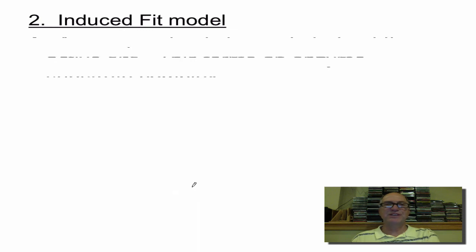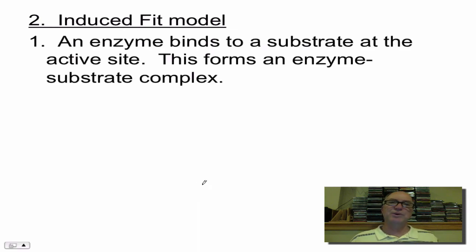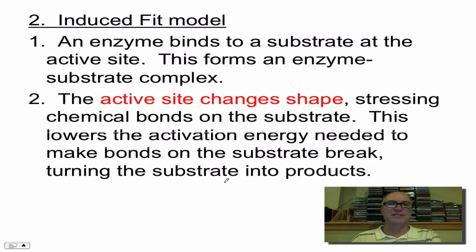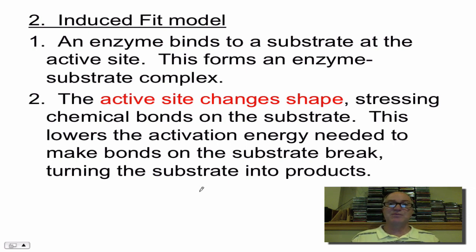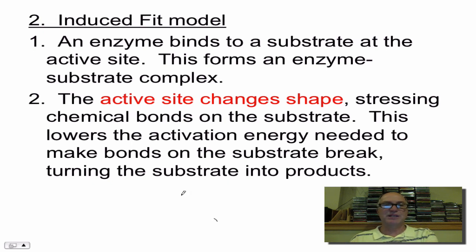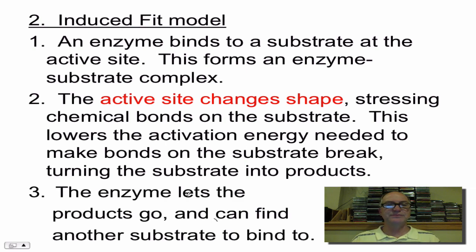Now there's a second model called the induced fit model. In this case, an enzyme binds to its substrate at the active site, forming what's known as the enzyme-substrate complex. But instead of being a perfect fit, the active site doesn't fit perfectly — so the active site changes shape and kind of clamps down on the substrate. That stresses chemical bonds, which lowers the amount of activation energy needed to make the bonds on the substrate break, therefore turning the substrate into products. The induced fit model explains a little bit better how an enzyme can lower activation energy. The enzyme can then let the products go and find another substrate to bind to.